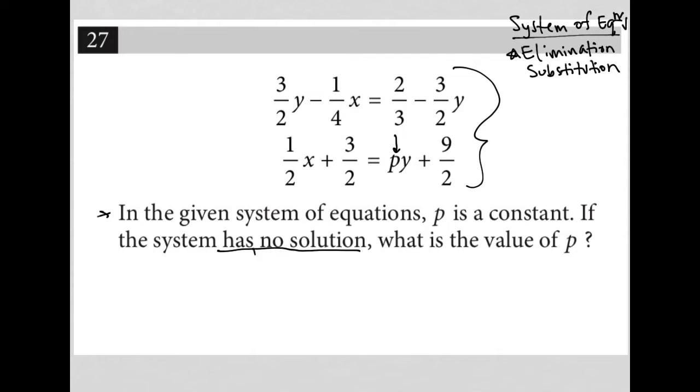So what does it mean for a system to have no solution? It means that both X and Y eliminate when we're using the process of elimination for solving our system of equations. And the remaining, which is just the numbers that remain, the remaining is not true.